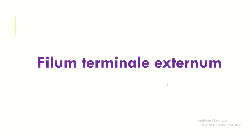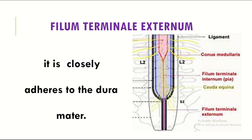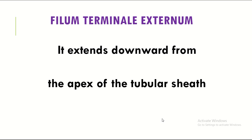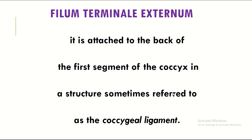Filum terminale externum: it is closely adherent to the dura mater. It extends downward from the apex of the tubular sheath and is attached to the back of the first segment of the coccyx, sometimes referred to as the coccygeal ligament.